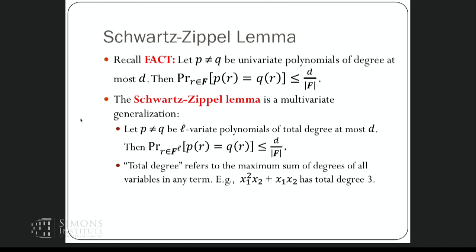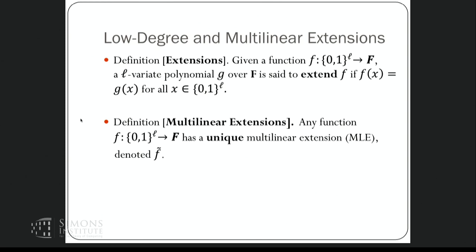Total degree means: take every term in the polynomial and sum all the powers in that term; the maximum such sum is the total degree. We'll mostly only need the univariate version in this talk. The Schwartz-Zippel lemma motivates extension polynomials. Given a function f mapping l bits to a field, an l-variate polynomial g over the field is said to extend f if f and g agree at all inputs where f is defined. g extends the domain of f from {0,1}^l to F^l.